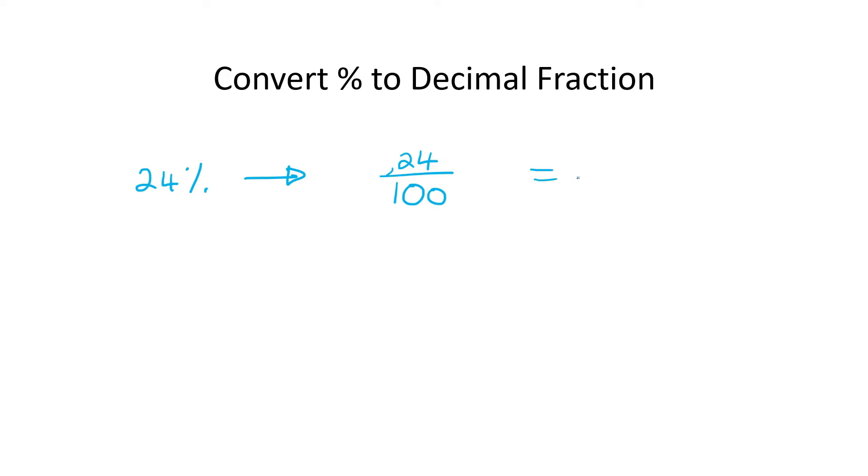So you end up with an answer that looks like this. But then, remember, you don't want to leave this empty in the front, and so you put a zero. So, we've learned that in earlier lessons, that when you divide with 100, you move the decimal two places left.